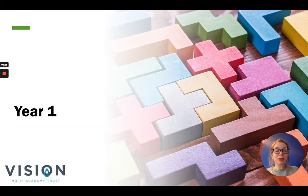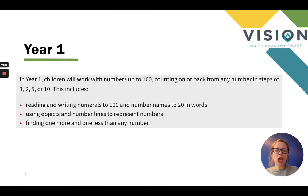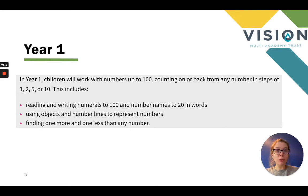So let's begin with looking at year one. In year one, children will work with numbers up to 100, and that will include counting on or back from any number within 100 and in steps of 1, 2, 5 or 10. This includes reading and writing numerals to 100 and number names to 20 in words, using objects and number lines to represent numbers, as well as finding one more and one less than any number.